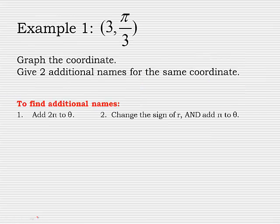Let's try one of these. Example 1. The directions say to graph the coordinate. Let's just do that first. The radius of 3, theta is my angle of pi over 3.